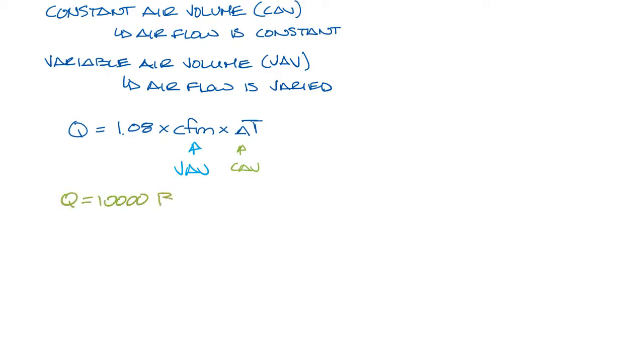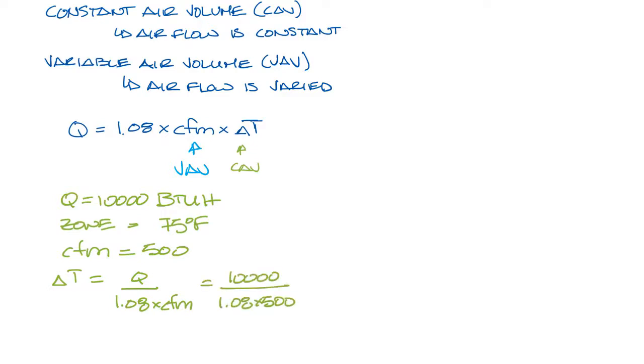If we do a quick example where the load is 10,000 BTU and we want the zone to be 75 degrees, and let's say we have 500 CFM, we can calculate delta T as Q divided by 1.08 times the CFM. That will equal 18.5 degree delta T. So 75 degrees minus 18.5 degrees is a supply air temperature of 56.5 degrees.